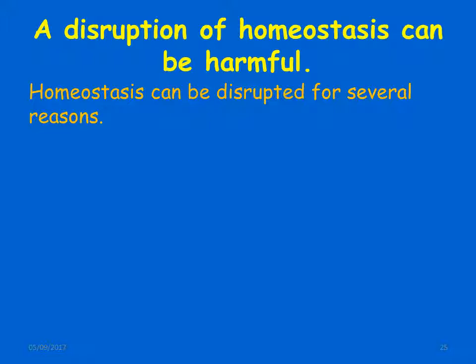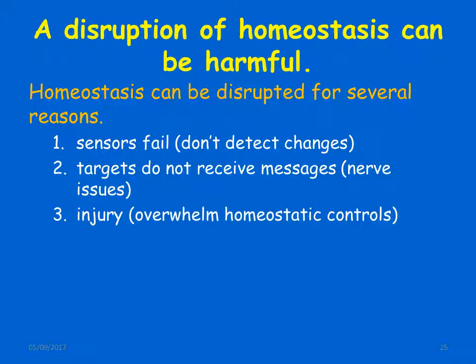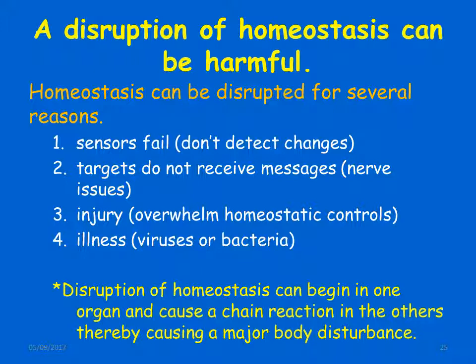Homeostasis can be disrupted for several reasons: sensors may fail to detect changes, targets may not receive messages, injury may overwhelm homeostatic controls, or illness caused by viruses and bacteria may interfere. A disruption of homeostasis can begin in one organ and cause a chain reaction in others, thereby causing a major body disturbance.